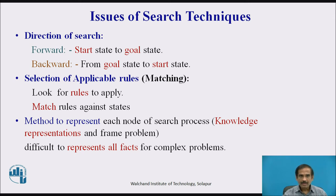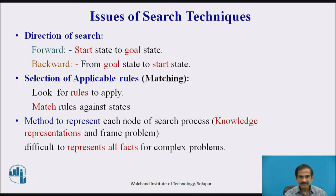The second issue is the selection of applicable rules — which rules match our particular goal. We look for the rules to apply and match them against states available in our search tree. The third issue is the method to represent each node for each search process: how much knowledge is required, how to represent that knowledge, and the frame problem, which gives a template for how the problem is to be solved. It is difficult to represent all these facts for complex problems.